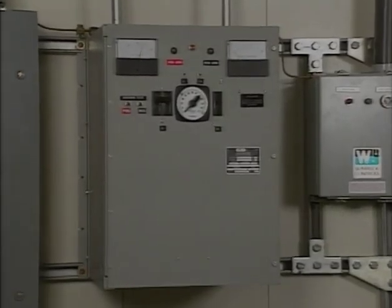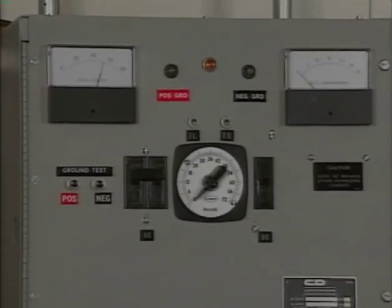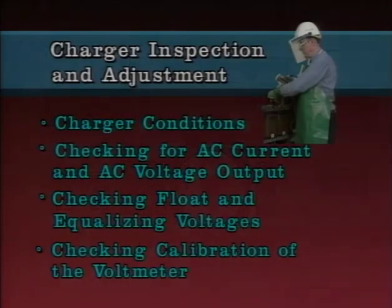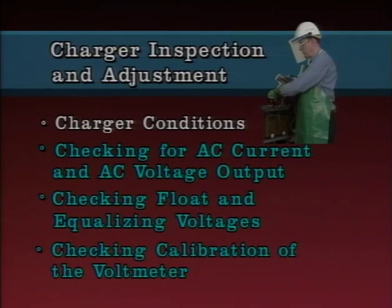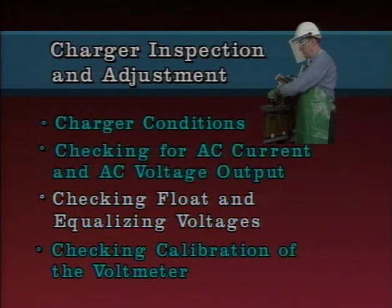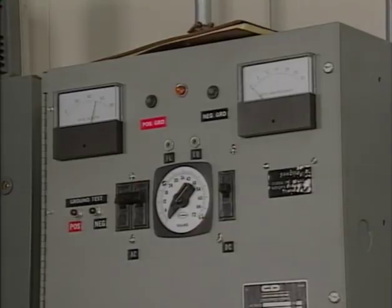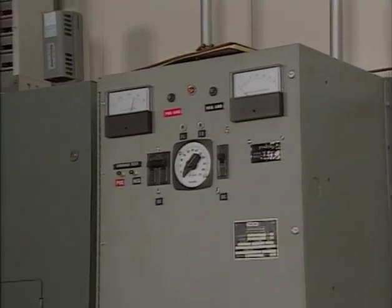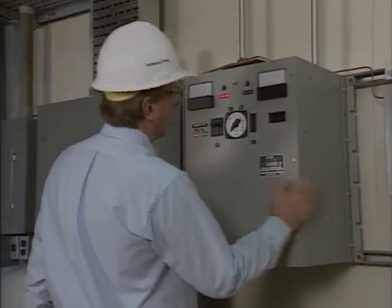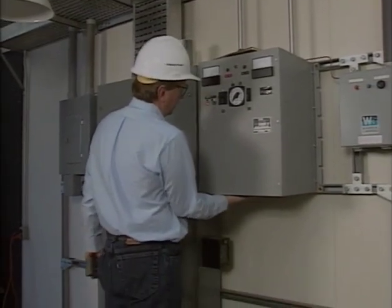All chargers require periodic inspection and adjustment. Proper maintenance will prolong the useful life of a charger and the battery that it serves. This last part of the program will demonstrate basic battery charger inspection and adjustment tasks, including inspecting general charger conditions, checking for AC current and voltage output, checking float and equalizing voltages, and checking the calibration of the charger's voltmeter. Routine charger inspections and adjustments are typically done while the charger remains in service, so internal terminals will be energized and all required safety precautions should be observed. A good place to begin is to check the charger for signs of excessive heat.